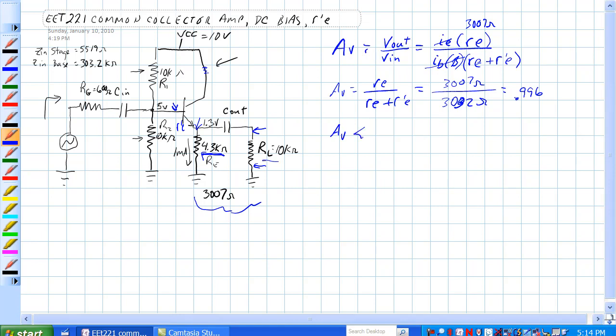AV, our gain is less than 1. The smaller we can make this R prime E by having more current through this, making this smaller, perhaps the better off we are. So gain for the circuit is less than 1.